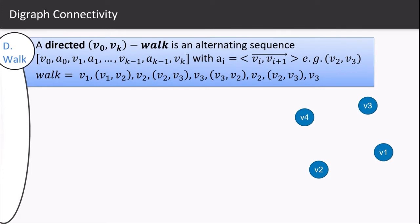Directed graph connectivity. A walk is an alternating sequence of vertices and arcs where every arc represents a directed ordered pair of vertices. So the walk in the given example is from v1 to v2, v2 to v3, then back to v2, then back to v3.